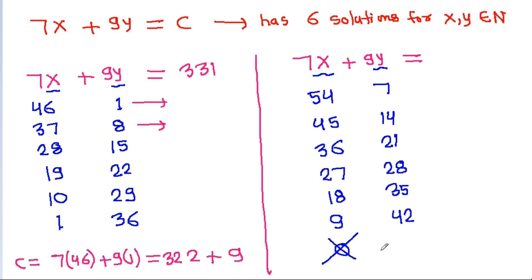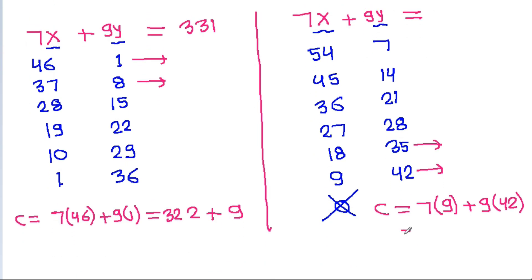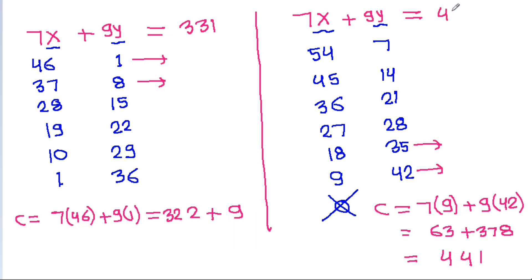We can find C from any value in this sequence. C equals 7 times 9 plus 9 times 42. Seven times 9 is 63, and 9 times 42 is 378. So 63 plus 378 equals 441. Therefore, the maximum value of C is 441.